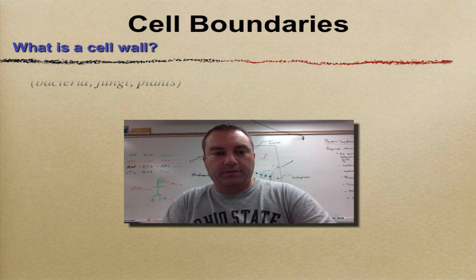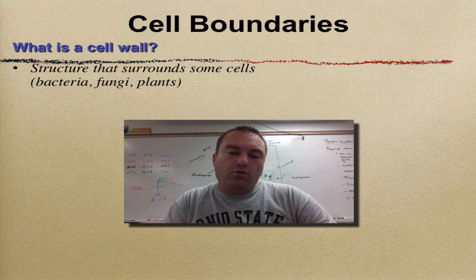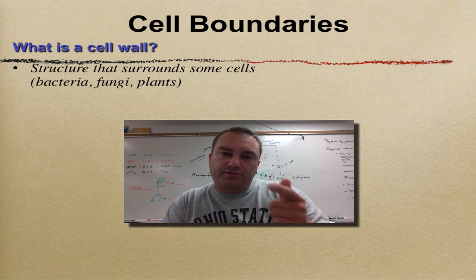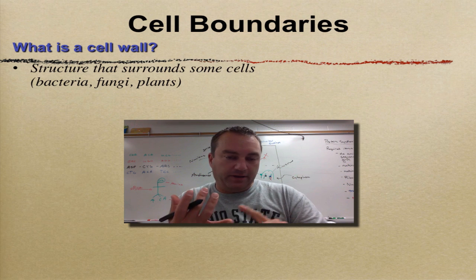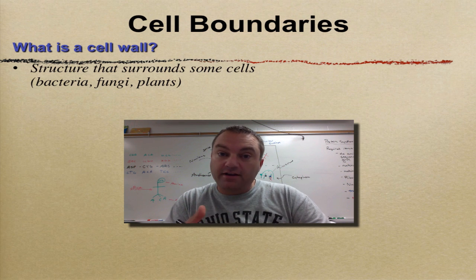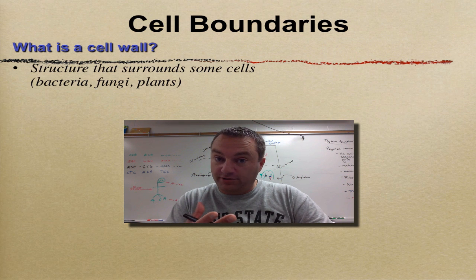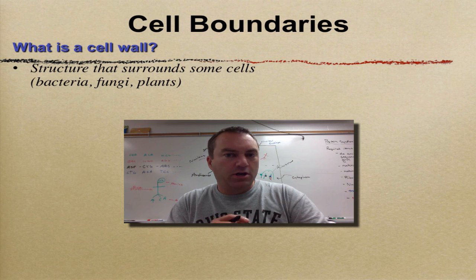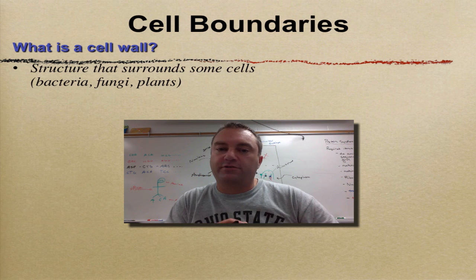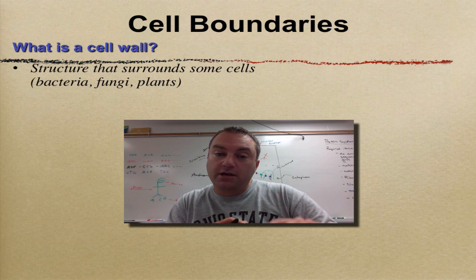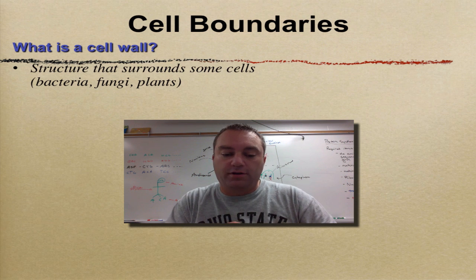So, what is a cell wall? Well, the cell wall is a structure that surrounds the outside of certain types of cells. Those would be bacteria, fungal cells, and plant cells. No animal cells on this one. In fact, one of the characteristics of animals is no cell walls.